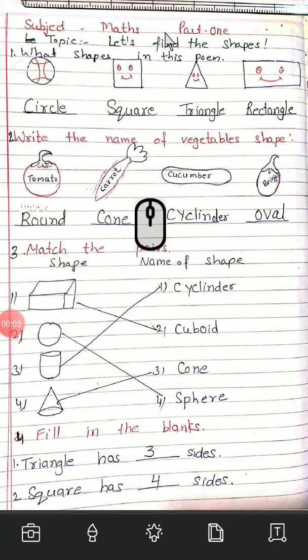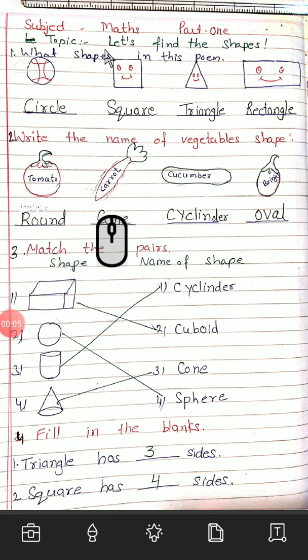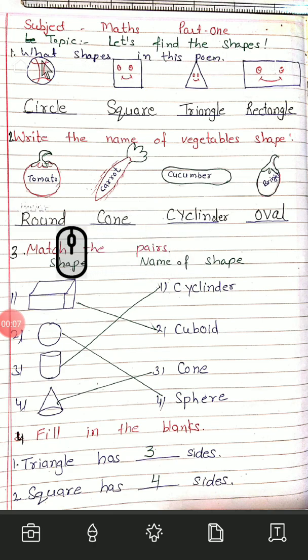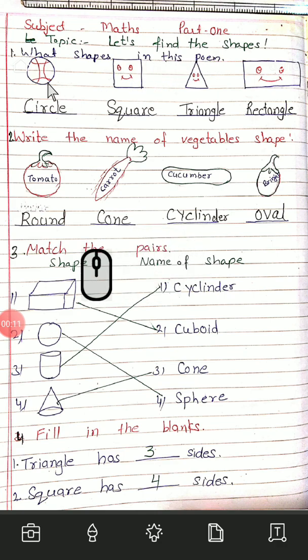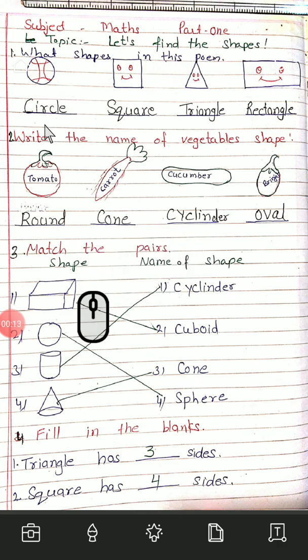Subject: Mass, Part 1. Topic: Let's Find The Shape. Question Number 1: What shape is this? Circle. C-I-R-C-L-E. Circle.